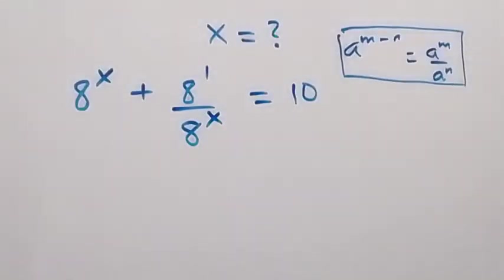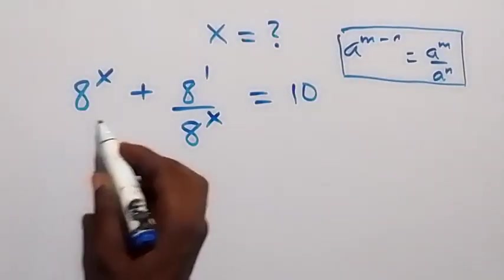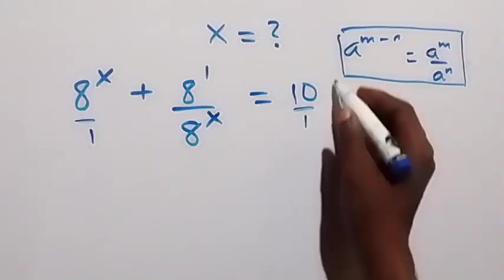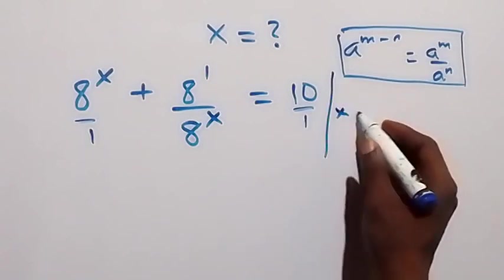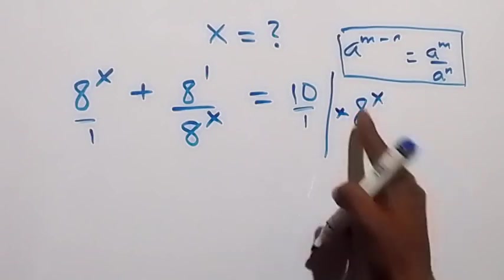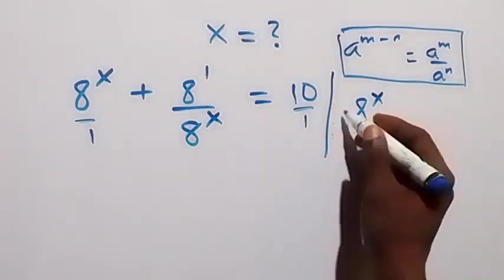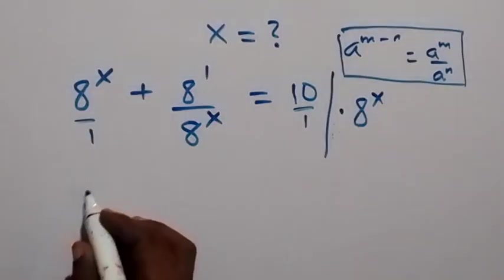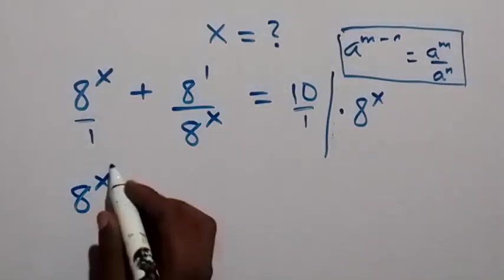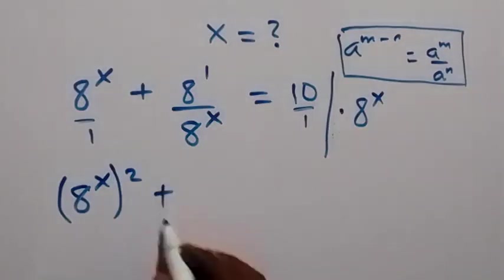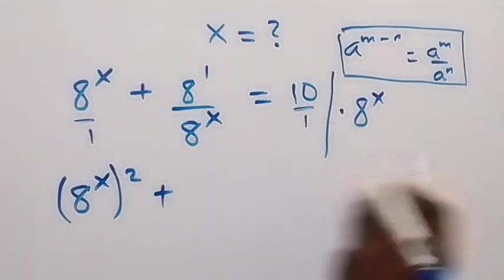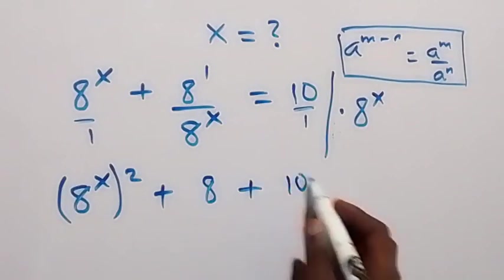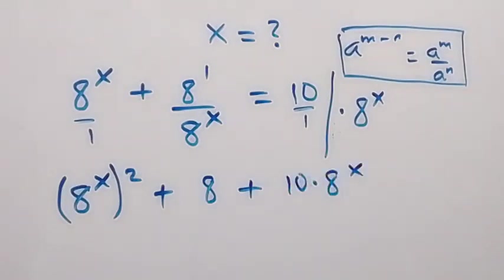In the next step, the LCM here is 8 raised to power x, so we multiply through by 8 raised to power x. When we multiply, 8 raised to power x times 8 raised to power x gives us 8 raised to power x squared, plus 8 raised to power 1 which is 8, equals 10 times 8 raised to power x.